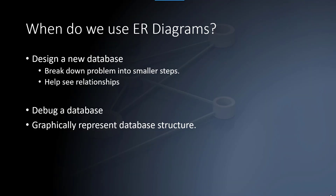We use an ER Diagram when we want to design a new database — basically to break down the problem into smaller steps and to help see relationships. Breaking down the problem means getting to the point where we want to actually design the table itself: what are the fields, are they required, what are the data types — those types of things.